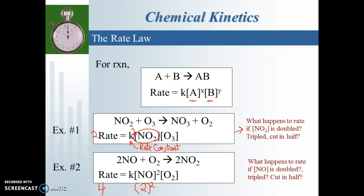What if I tripled the NO concentration? Well, we're tripling what's inside, but since it's squared, it's going to have the impact of three squared, which is nine. So the rate would increase by nine times what it originally was. We have a case where the rate is proportional to the square because of the exponent. When there's no exponent written, the exponent is one — directly proportional. If it's two, it's proportional to the square.